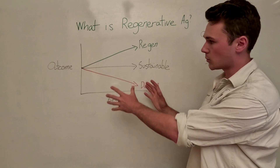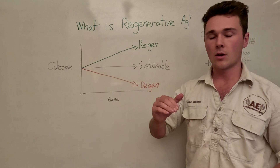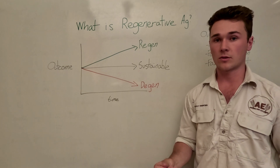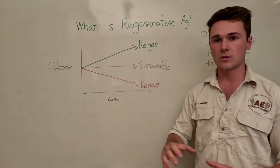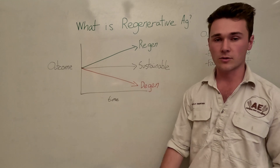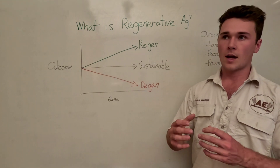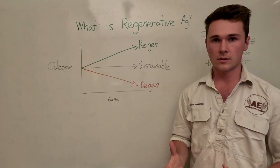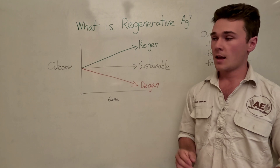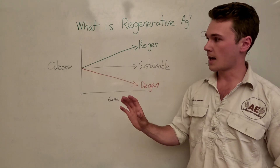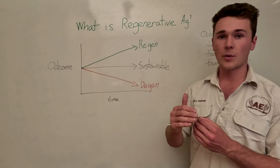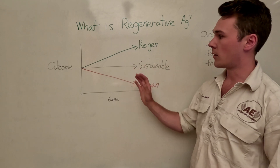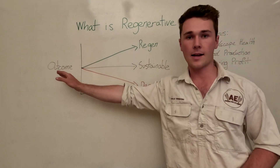Because we're looking at this as an improvement or worsening of an outcome over time, it's actually really difficult to describe. There is no set practice to say what regenerative agriculture is — it's not like organic farming, which is the absence of toxins in our farming system. It's really outcome-based: are we improving or degrading the system? And that in itself is easy to define.